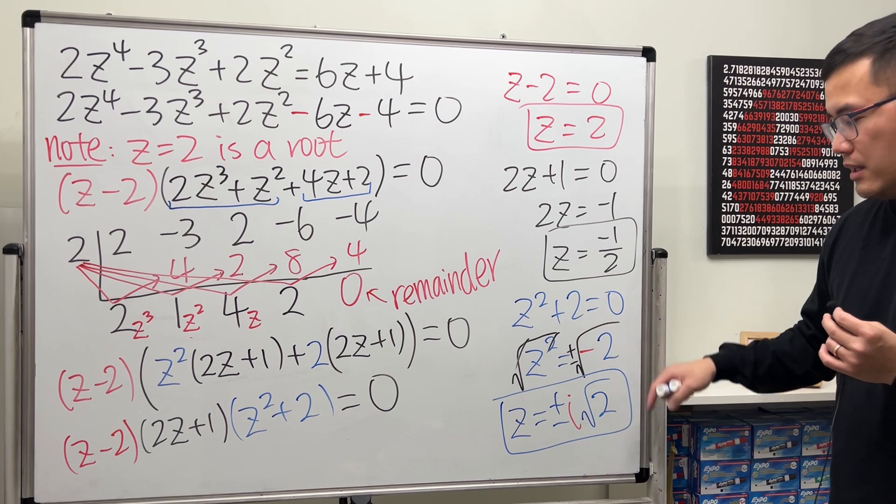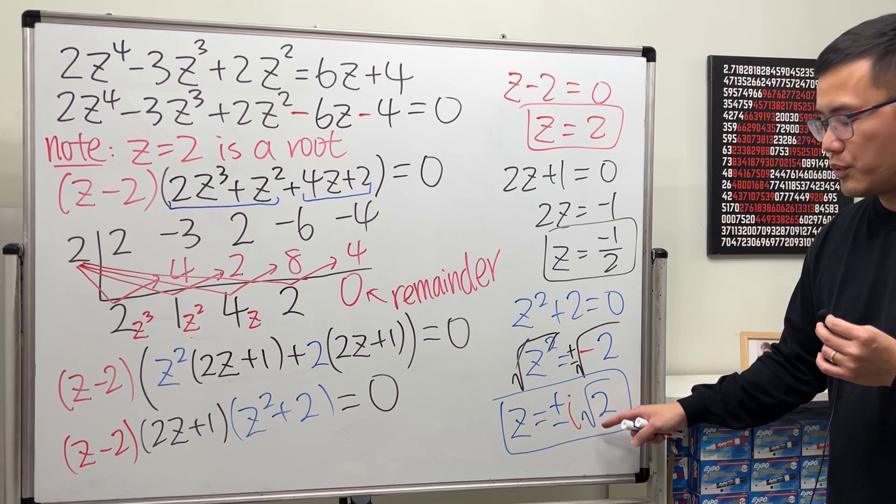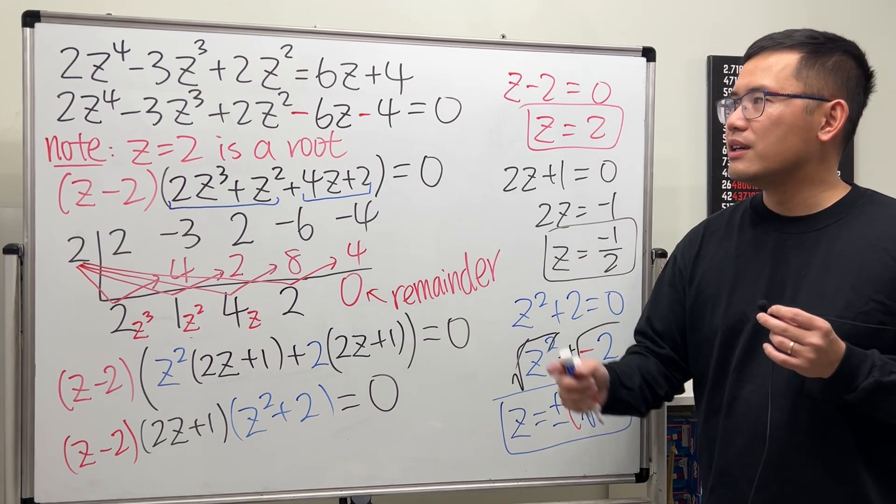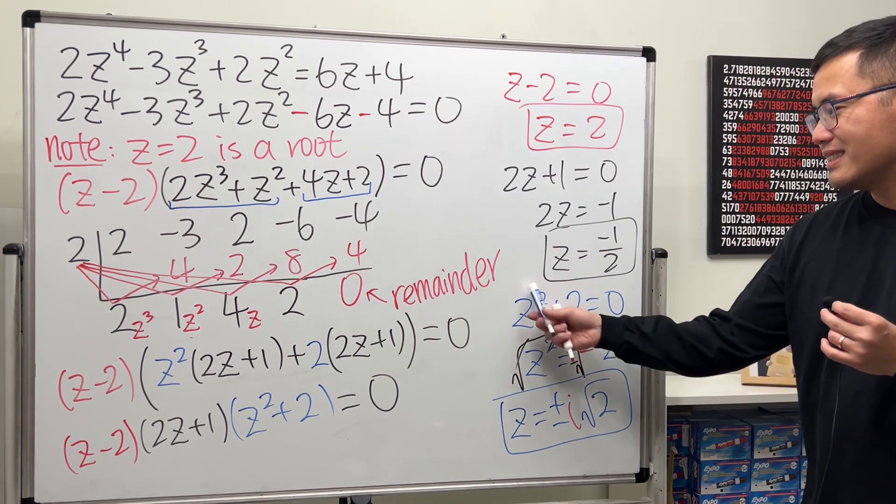There you have it. 2, negative 1 half, positive i√2, and negative i√2. These are the four answers to that polynomial equation. Hopefully this right here helps. That's it.